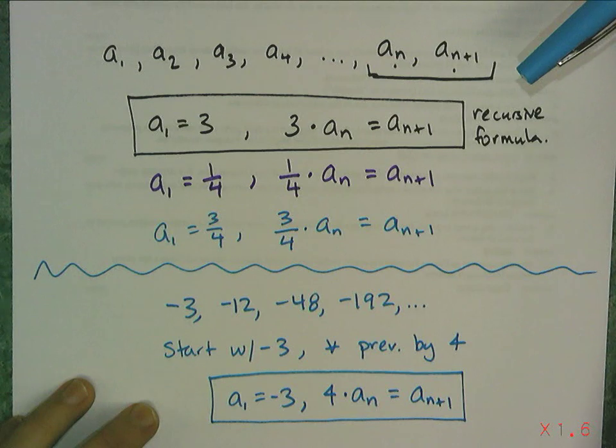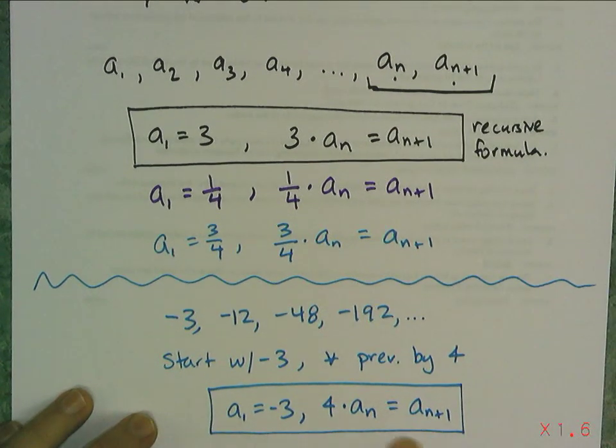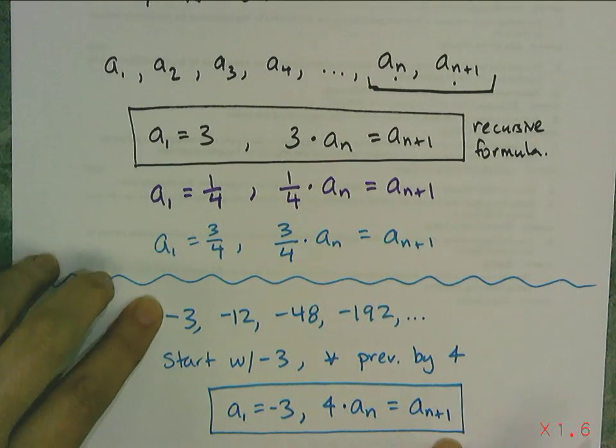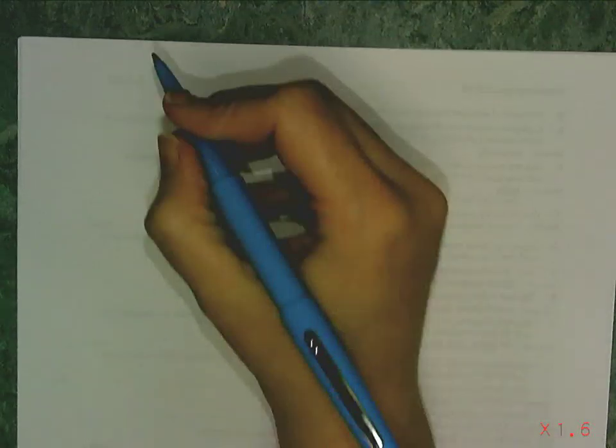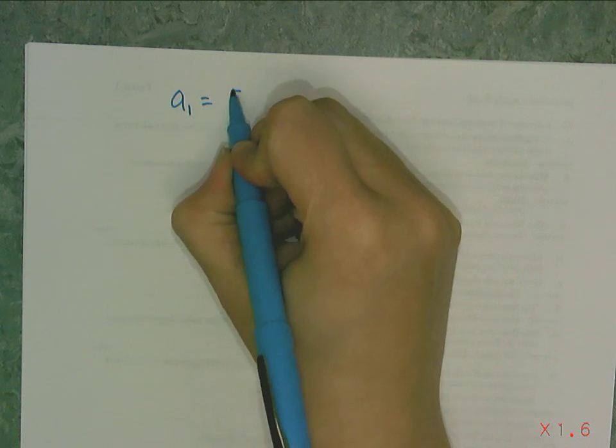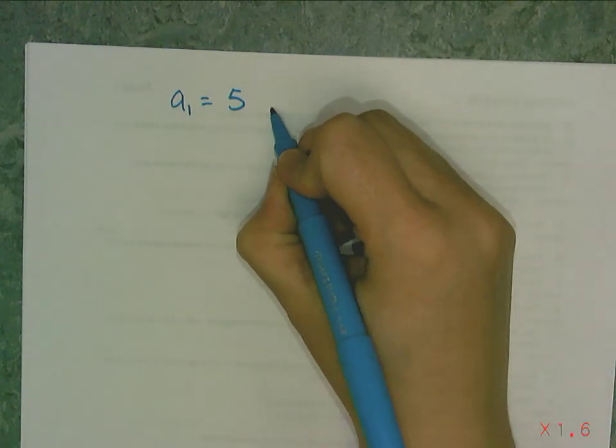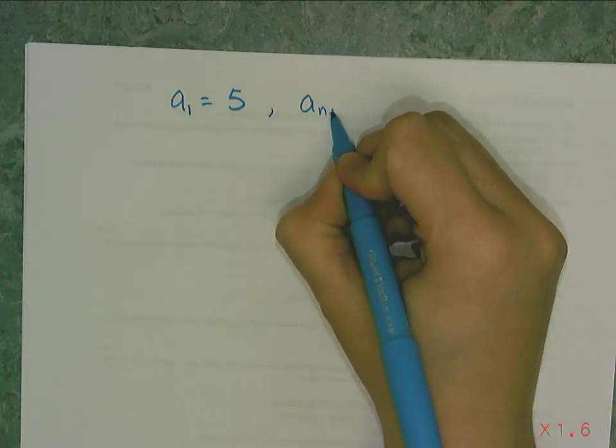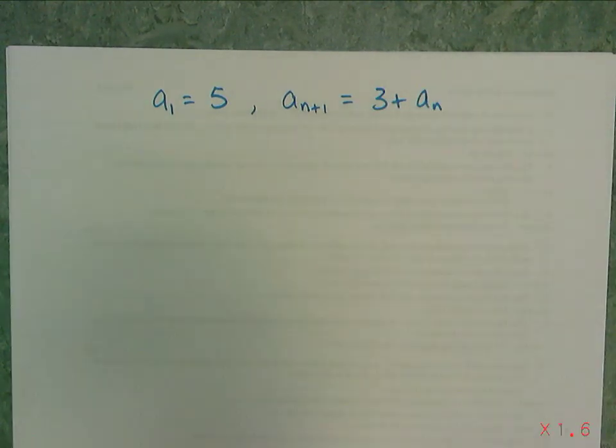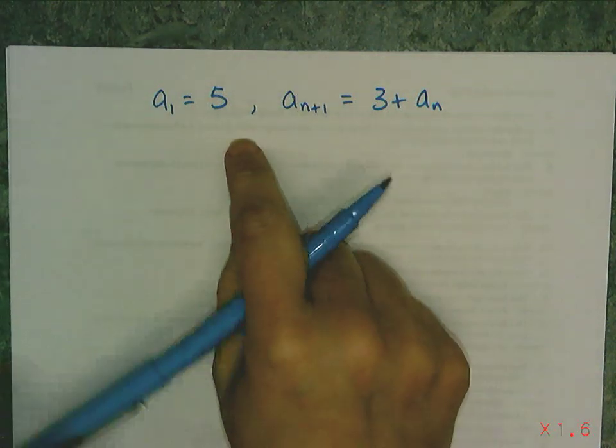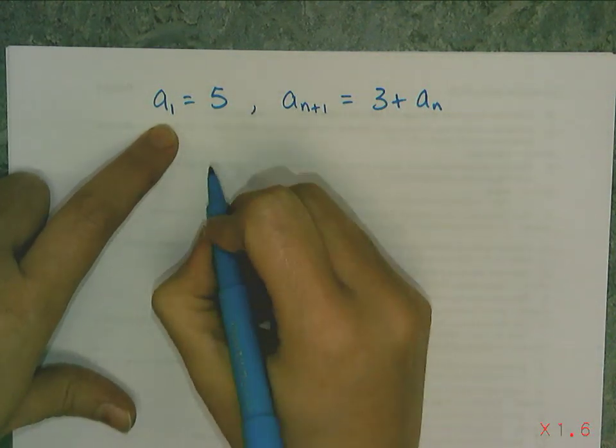Now I can work this backwards, meaning I can give you one of these descriptions, and then your job is to generate the actual sequence. So let's look at this rule. I have a₁ = 5. And I'm telling you that aₙ₊₁ is equal to 3 + aₙ. If I dissect this, it says start with 5. So I write down a 5.